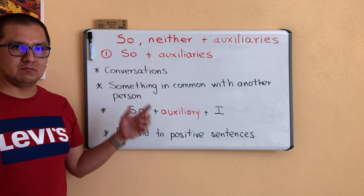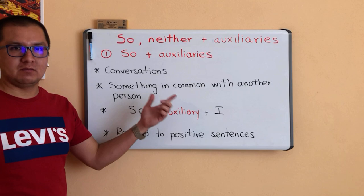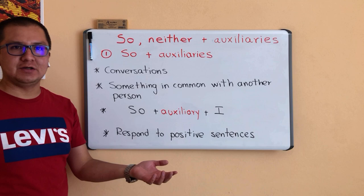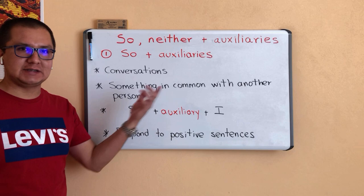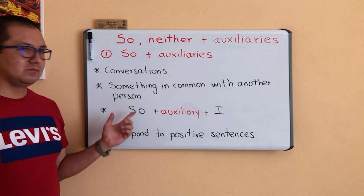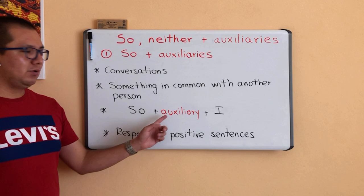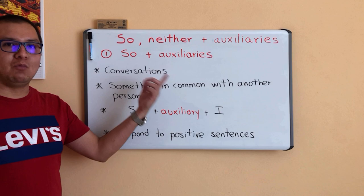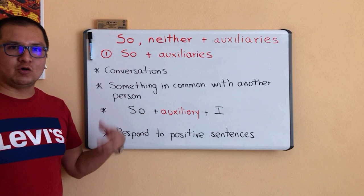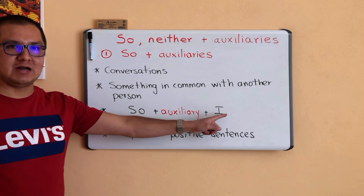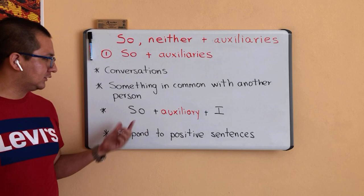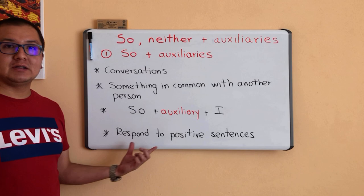When you have a conversation with another person and you have something in common with that person — I mean you have the same opinion or you agree with what another person said — you use SO plus Auxiliaries. The structure is: SO plus an Auxiliary, which can be a modal auxiliary like CAN, COULD, or WILL, plus the pronoun I. You use SO plus Auxiliaries plus I when you want to respond to positive sentences.